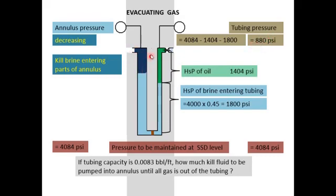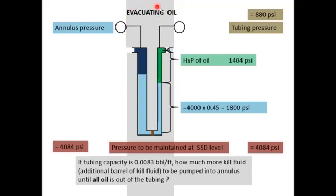So the tubing head pressure drops to 880 psi once all gas is out of the tubing. The kill brine entering the annulus means the annulus pressure is decreasing — it's no longer 529 psi. If the tubing capacity is 0.0083 bbl/ft, then the volume of the gas column (4,000 ft) gives us the volume of kill brine needed to displace all the gas out of the well.